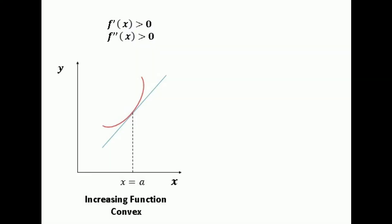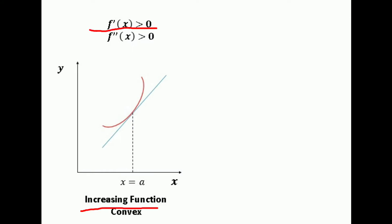A function is convex at x = a if in an area very close to a the graph of the function lies completely above its tangent line. If f'(x) > 0 the function is increasing, and a positive second derivative at x = a denotes the function is convex at x = a — so it is both increasing and convex.